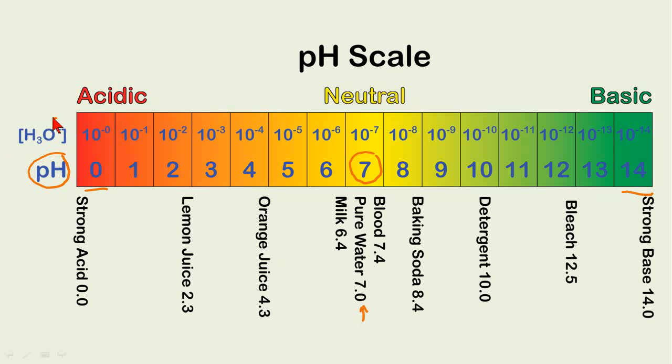pH is measured from the hydronium cation concentration. In pure water, this concentration is 7, and here are the various concentrations from 0 all the way up to 10 to the minus 14.